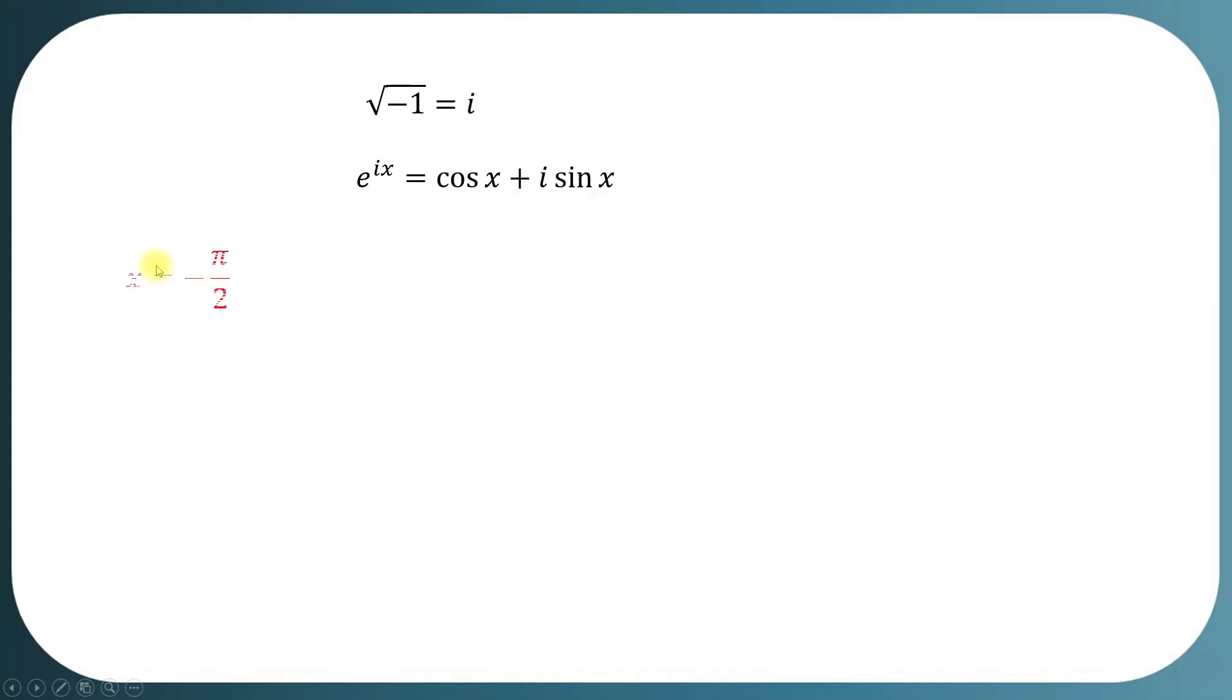At x equals negative pi by 2, negative iota equals E to the negative iota times pi by 2.